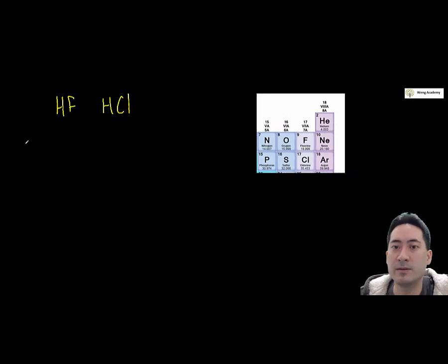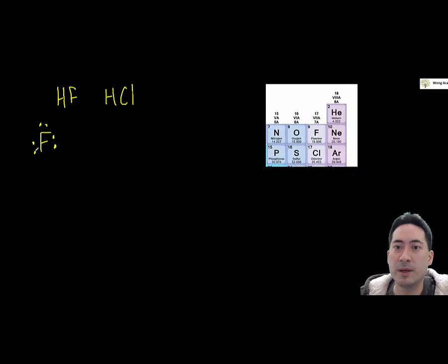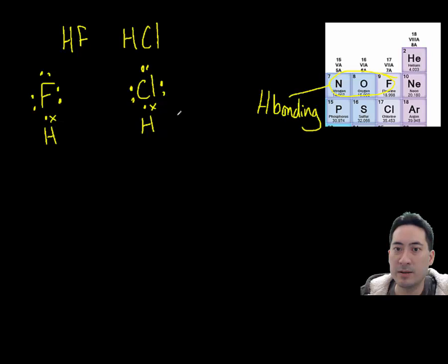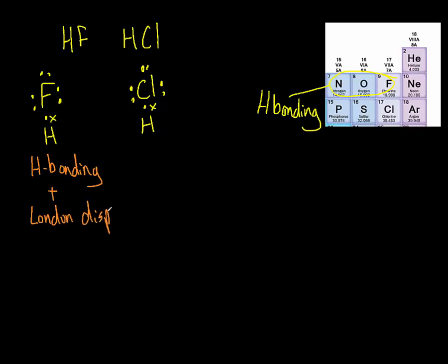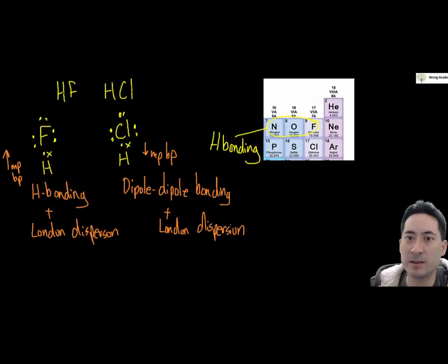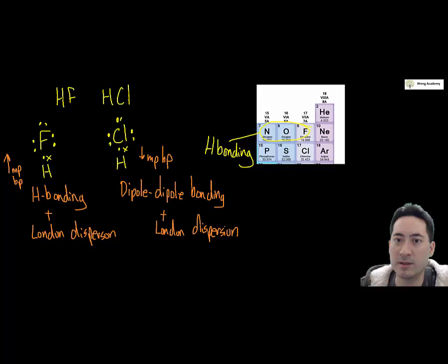Here we have hydrogen fluoride and hydrogen chloride. The difference is that fluorine enables hydrogen bonding while chlorine does not. That's the distinguishing feature that makes hydrogen fluoride have the higher melting and boiling point.